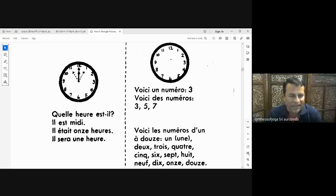Quelle heure est-il? What time is it? Il est midi. It is noon. In Tamil, we say it is 12. It is 12, it is midi. M-I-D-I is midi. You can say it in French: Il est midi.